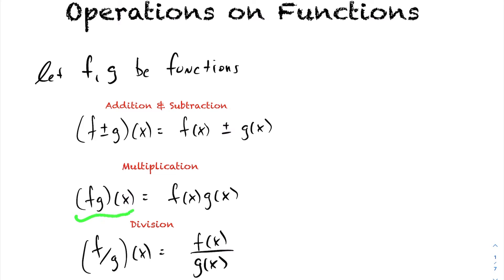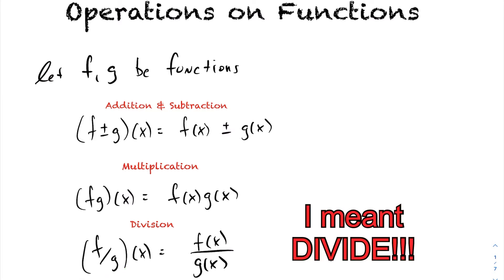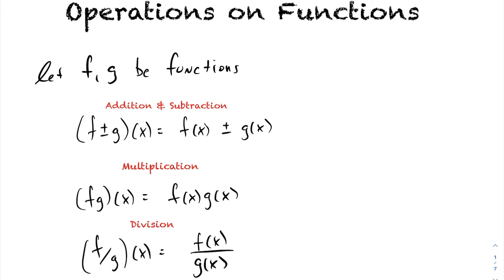For multiplication, the notation fg acting on x is equivalent to f(x) times g(x). For division, f divided by g acting on x is equivalent to f(x) divided by g(x). These all create new functions. When you do these operations — addition, subtraction, multiplication, or division — that will adjust the domain and range of the function, because now it's a new function and won't necessarily have the same domain or range as f or g.